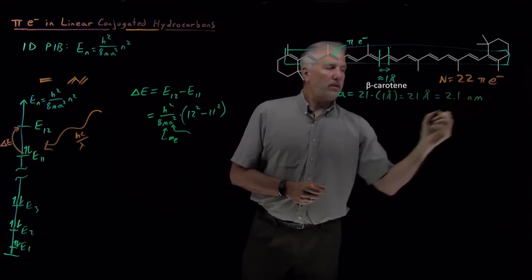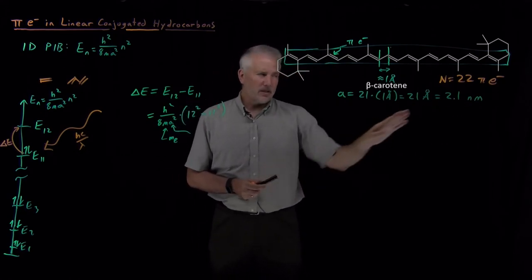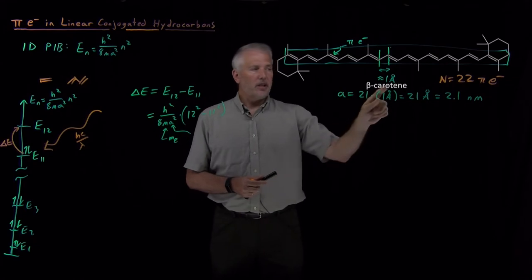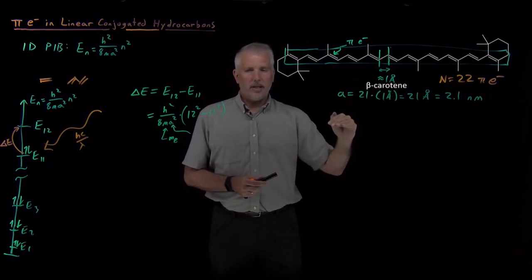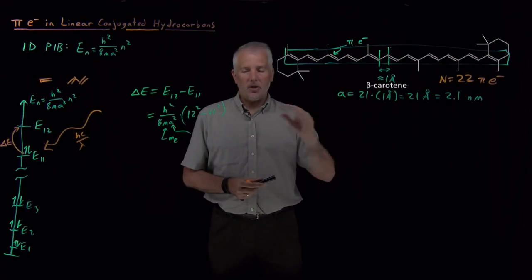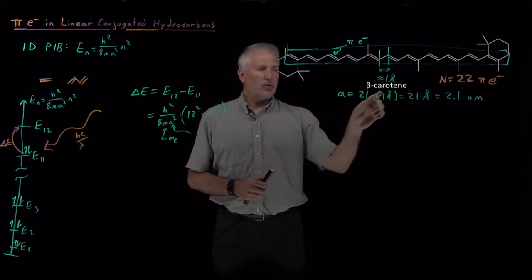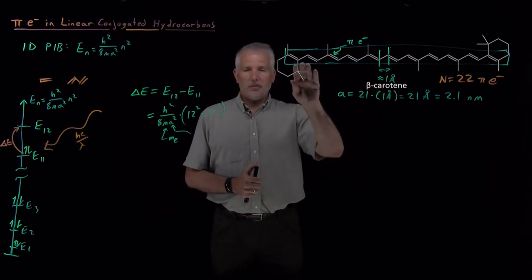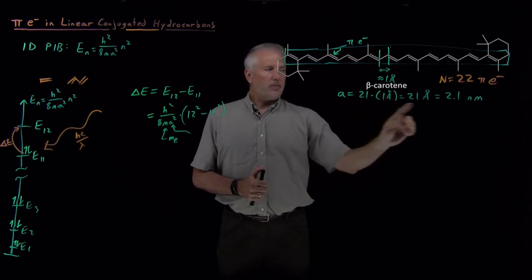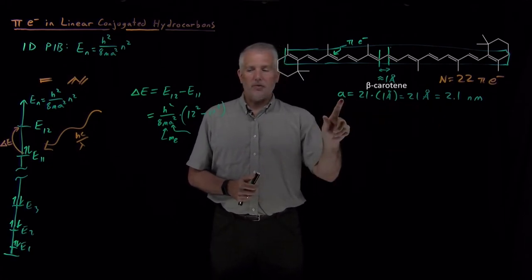So that's 21 angstroms, roughly, or 2.1 nanometers. And this is a fairly rough calculation. That number is only one sig fig, because we'll see when we get to the end that our ultimate answer is not going to be terribly accurate to lots of sig figs, so we're fine with just this rough approximation for the length of the box. But roughly speaking, the backbone of this molecule, the conjugated backbone, is 2.1 nanometers long, and that's our value for the box length.